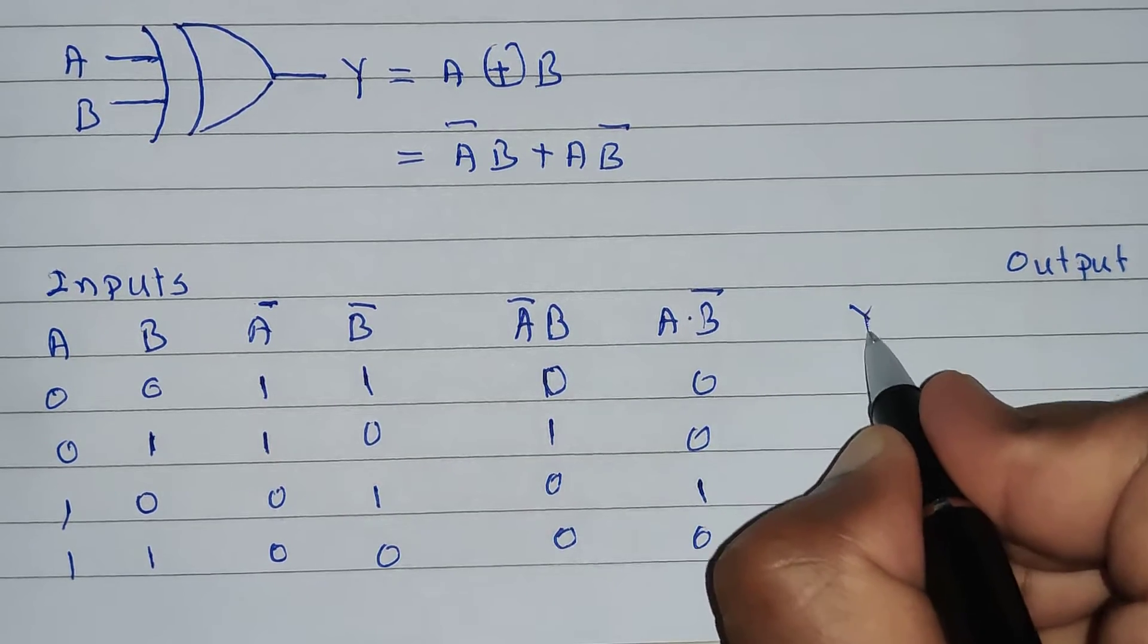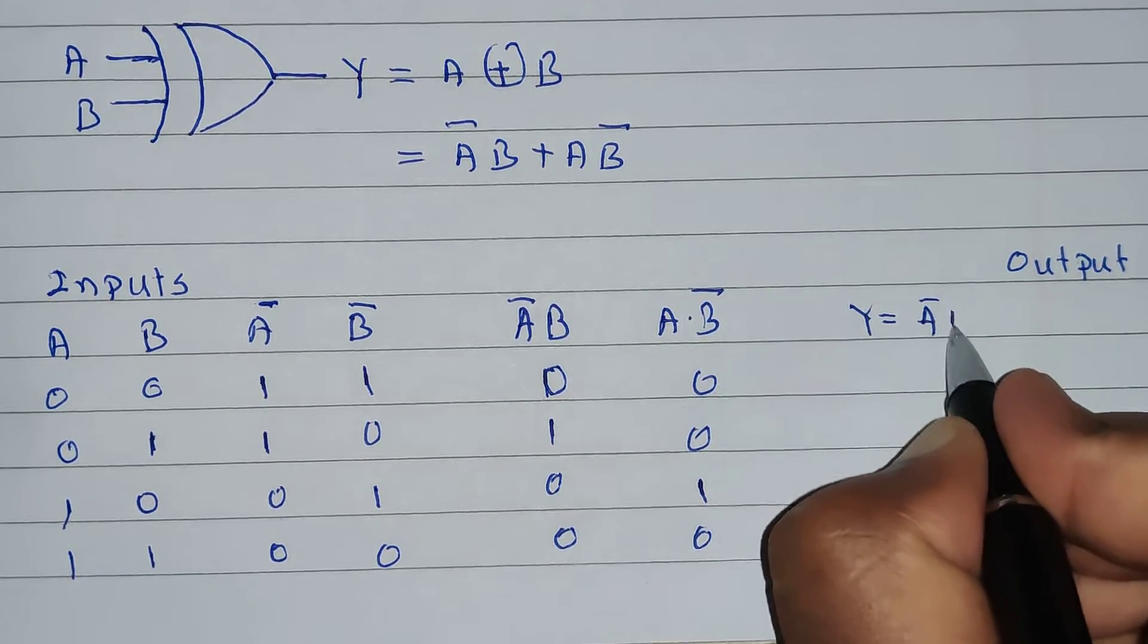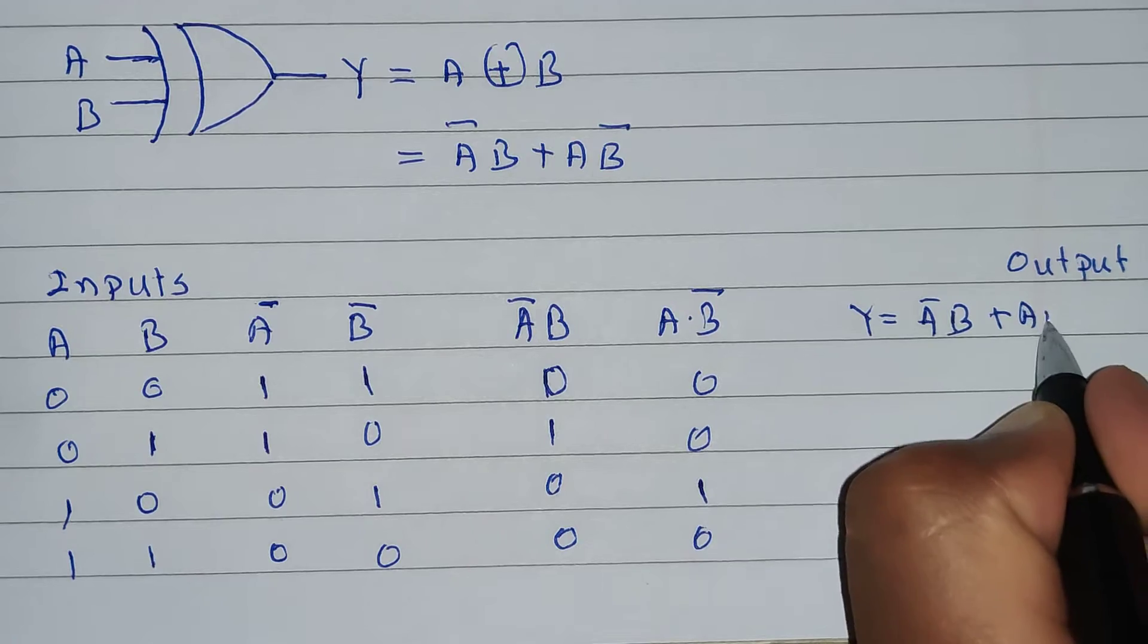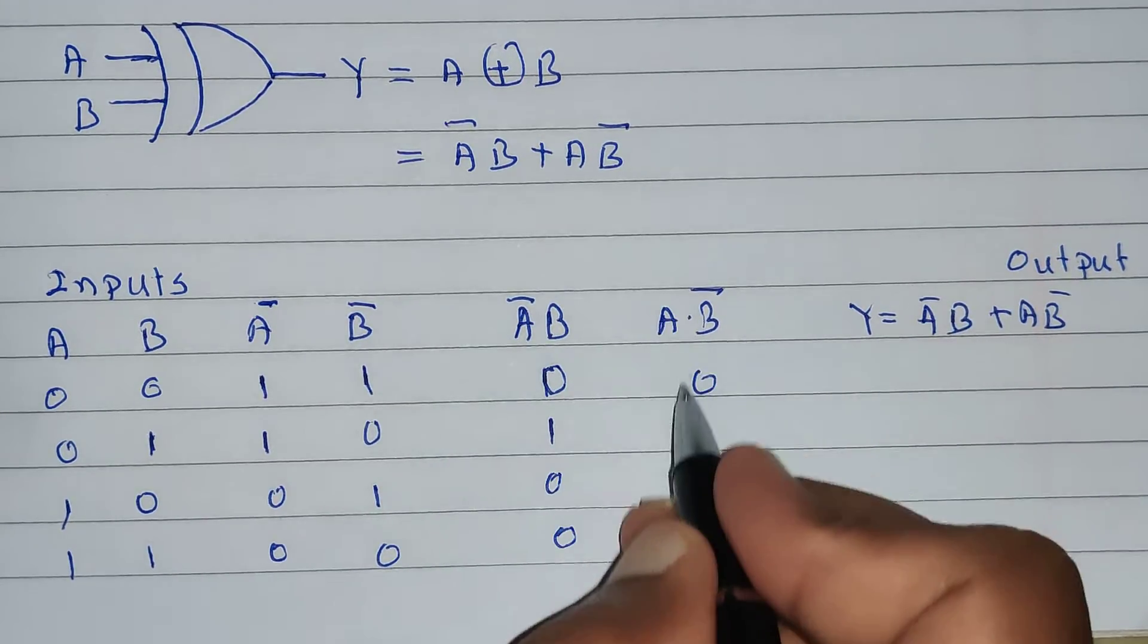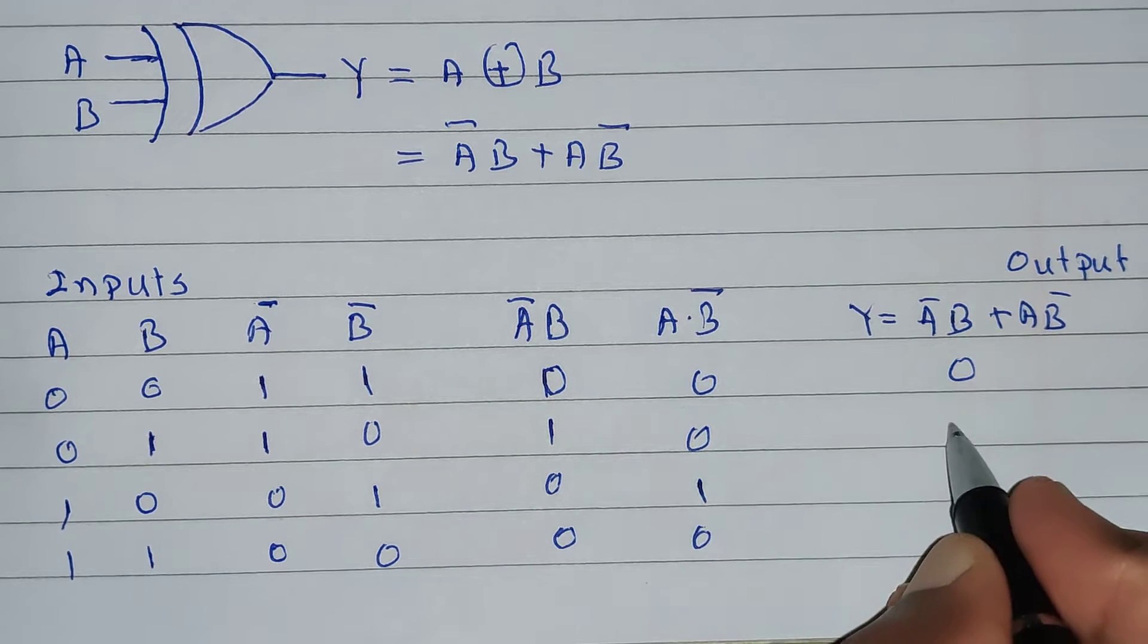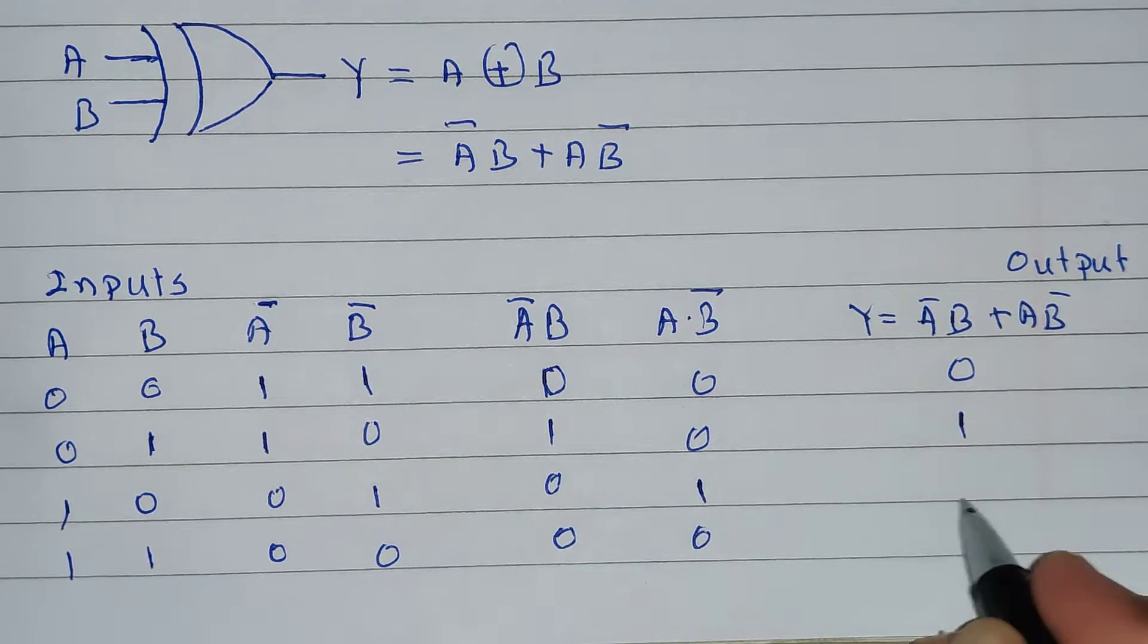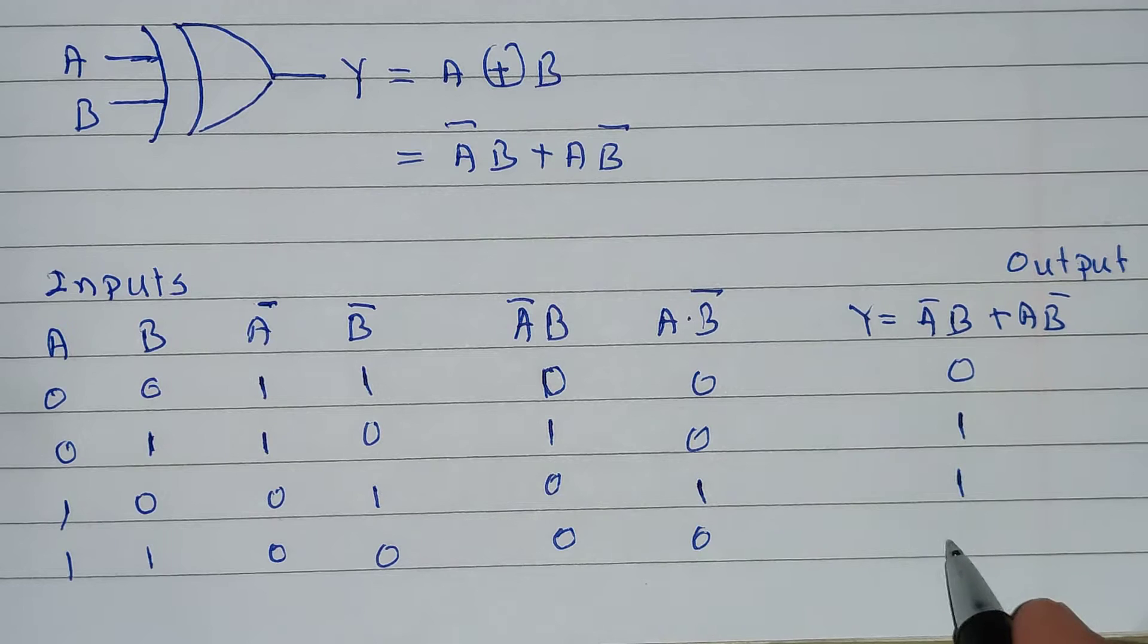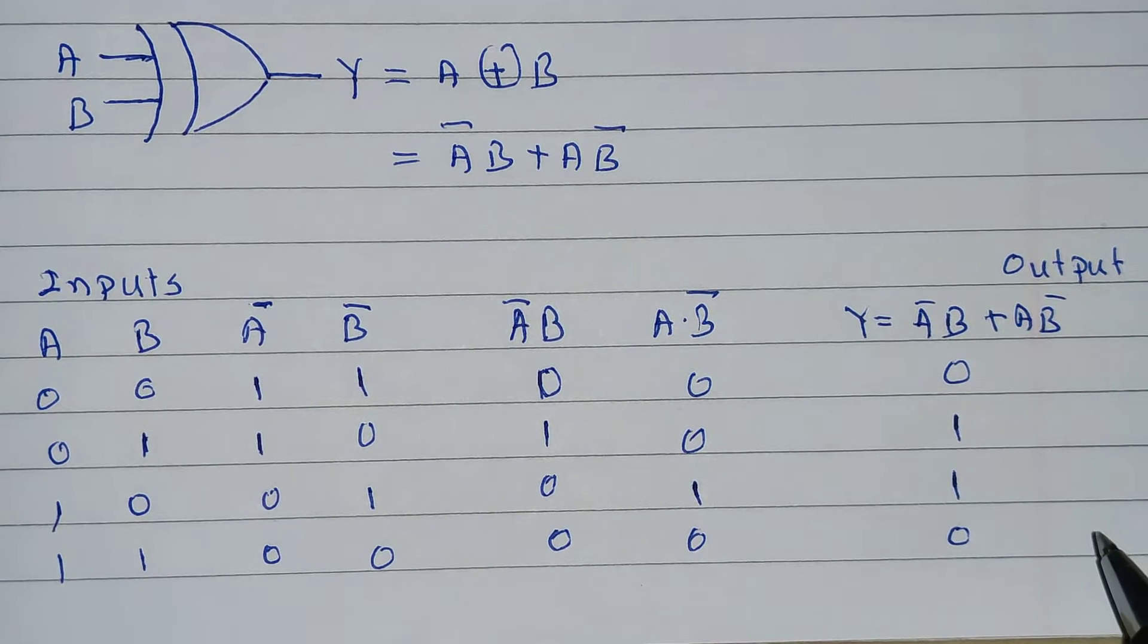Now, finally, output Y will be A bar B plus A B bar means addition of these two columns. So, 0 plus 0 is 0, 1 plus 0 is 1, 0 plus 1 is 1, and 0 plus 0 is 0.